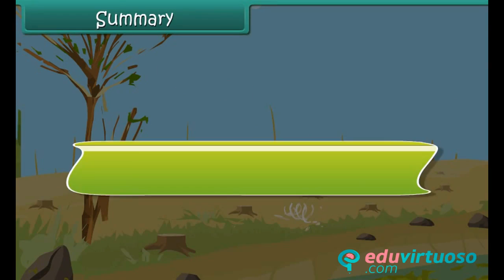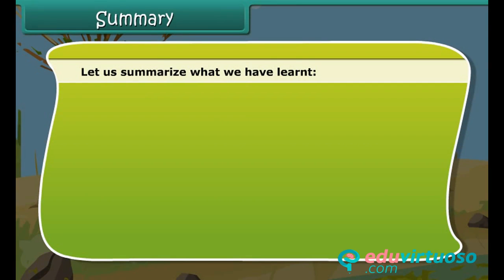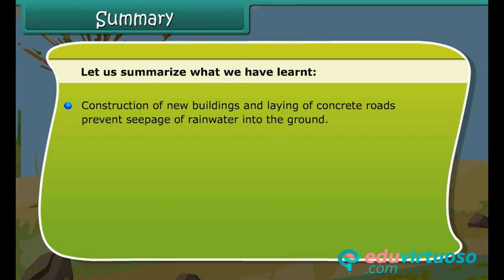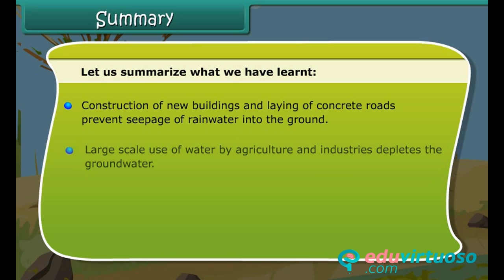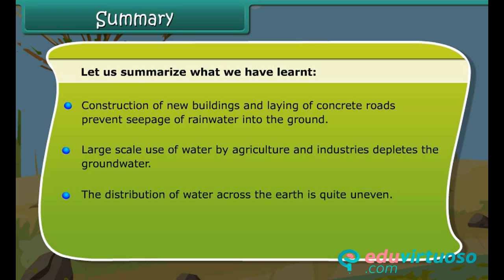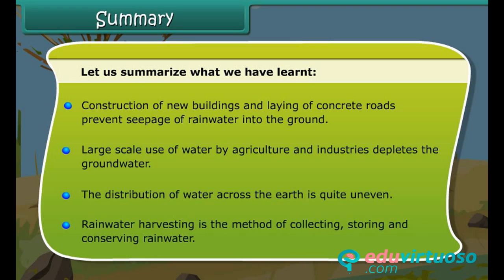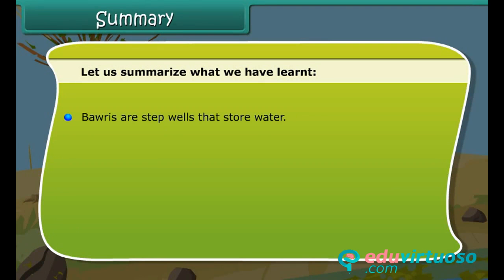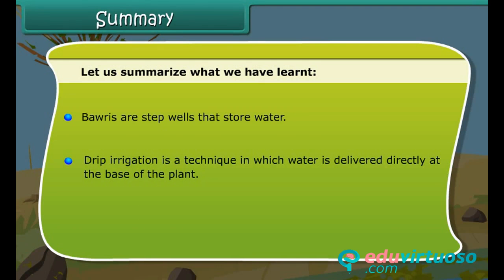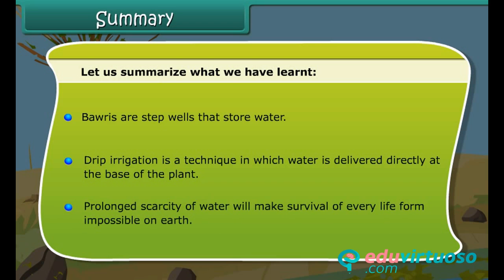In summary: construction of new buildings and laying of concrete roads prevents seepage of rainwater into the ground. Large-scale use of water by agriculture and industries depletes groundwater. The distribution of water across the earth is quite uneven. Rainwater harvesting is the method of collecting, storing and conserving rainwater. Bavari are step wells that store water. Drip irrigation delivers water directly at the base of the plant. Prolonged scarcity of water will make survival of every life form impossible on earth.